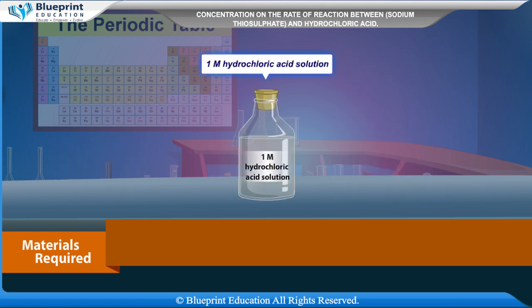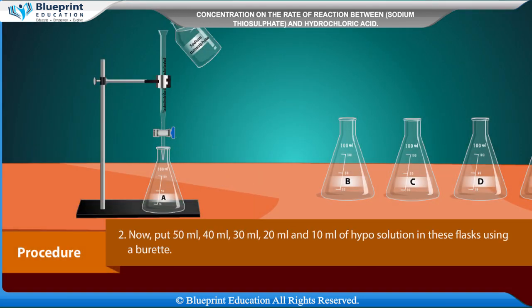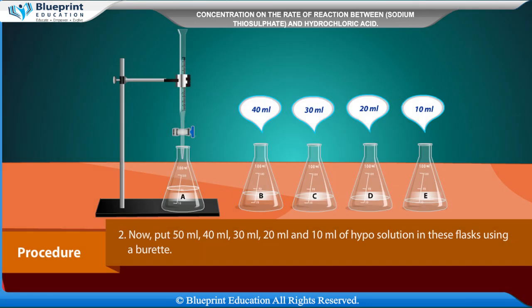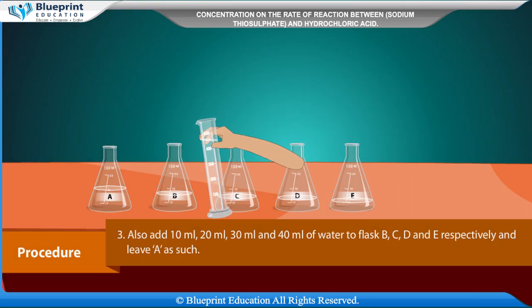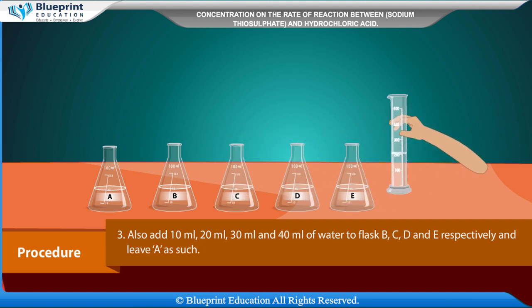Procedure: Take 5 conical flasks and label them as A, B, C, D and E. Now put 50 ml, 40 ml, 30 ml, 20 ml, and 10 ml of hypo solution in these flasks using a burette. Also add 10 ml, 20 ml, 30 ml, and 40 ml of water to flasks B, C, D, and E respectively, and leave A as such.